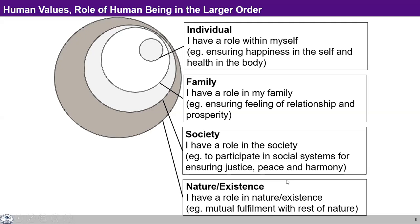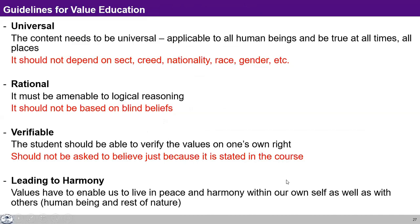So it is very simple to understand what is valuable for me as a human being at different levels. When I'm able to identify these roles, these are the ones which appear as human values for me as a human being. If I have to live like a human being, I have to have these human values.